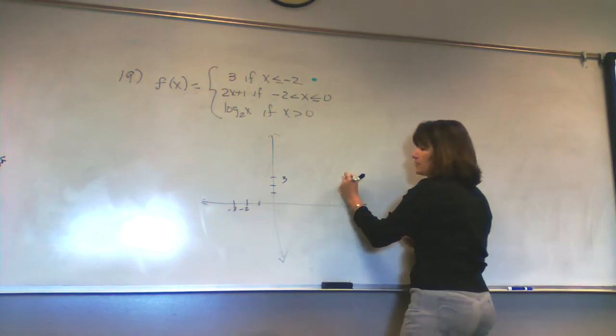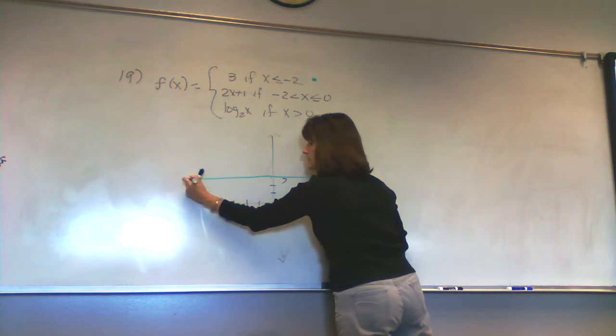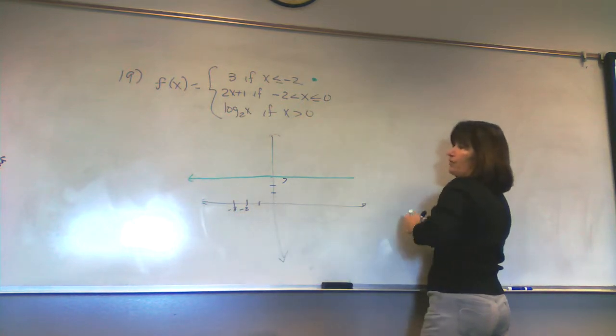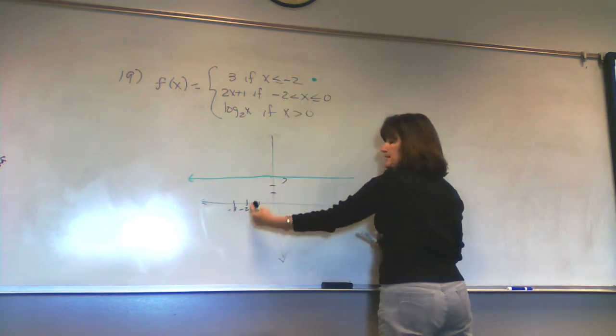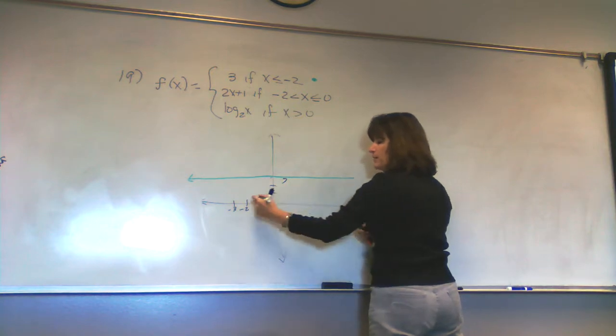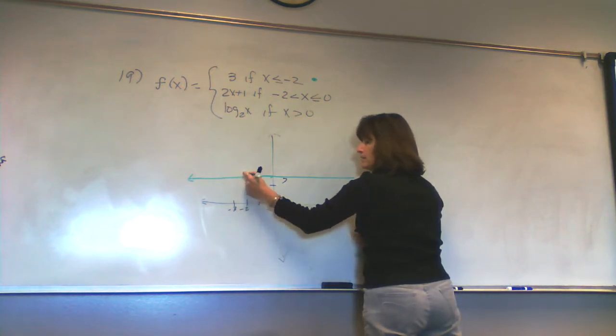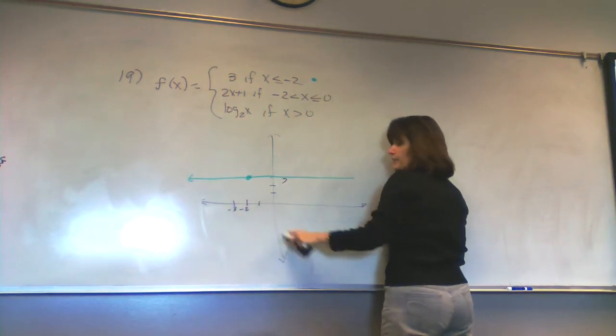If I were going to draw the whole thing, it would look like this, but I don't get to draw the whole thing. I only get to draw the part where x is less than or equal to negative 2, so from here on, yes, but not over here.